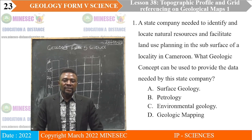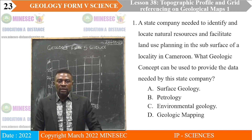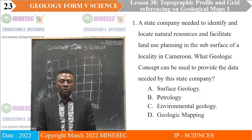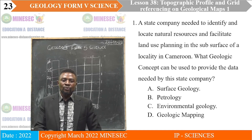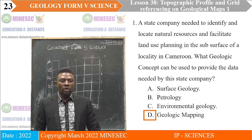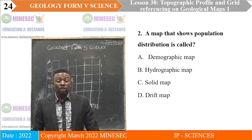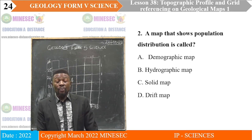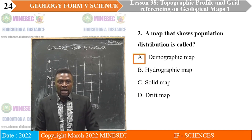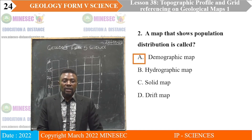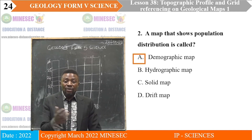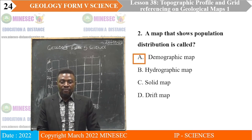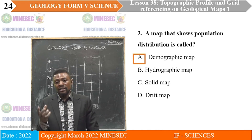For the exercises: number one — a company needed to identify and locate natural resources and facilitate land use planning in the subsurface of a locality in Cameroon; what geologic concept can be used to provide the data needed? The answer should be geologic mapping. A map that shows population distribution is called a demographic map. A hydrographic map shows water bodies of the earth's surface such as rivers, streams, seas, and oceans. A solid map shows distribution of bedrocks, and a drift map shows distribution of loose sediments — all are categories of geologic maps.